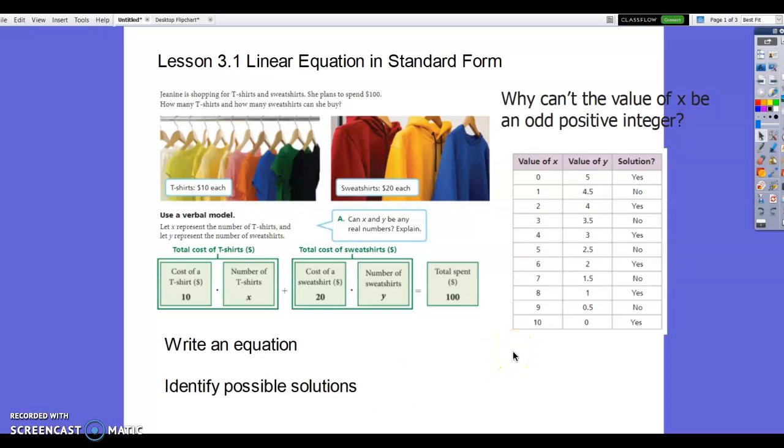Jeannie is shopping for t-shirts and sweatshirts. She plans to spend $100. How many t-shirts and how many sweatshirts can she buy? In the picture here, it shows us that t-shirts are $10 each and sweatshirts are $20 each. So it says use a verbal model. We're going to say first, let X represent the number of t-shirts we have, and let Y represent the number of sweatshirts that we have.